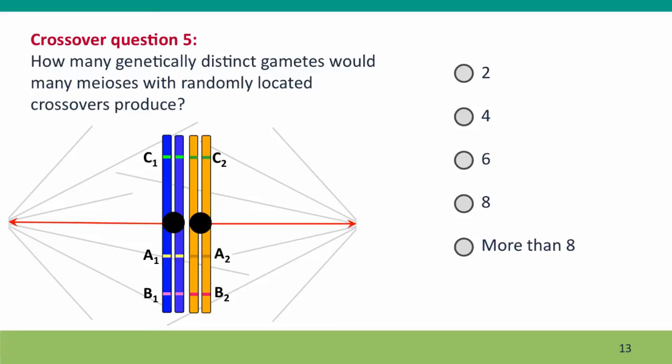Now, one last question. How many genetically distinct gametes would we get if there were many meiosis and they occurred, instead of all occurring at the same place, they occurred at random locations along the chromosome? And the answer is eight. In fact, we would get all of the possible genotypes. There are eight possible genotypes when we have three loci, each with two alleles. And we will see all of those combinations if we have many crossovers in many different meiosis at random locations.